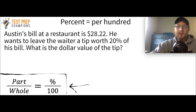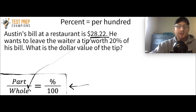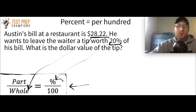Austin's bill at a restaurant is $28.22. He wants to leave the waiter a tip worth 20% of his bill. What is the dollar value of the tip? Using the formula, the whole is 28.22 — the whole is always going to be the bigger number. The percent is given right in the question: 20%. So in the formula where I see the percent sign, I put 20. The tip is going to be a smaller number than the whole bill, so since we don't know what the tip is, I put in X for part.